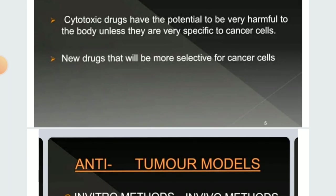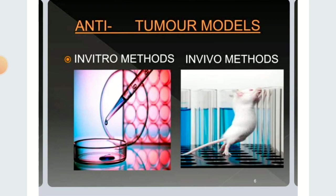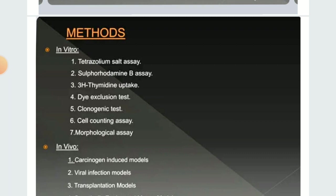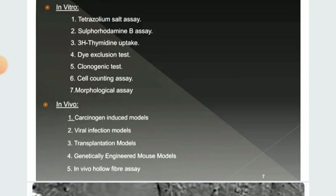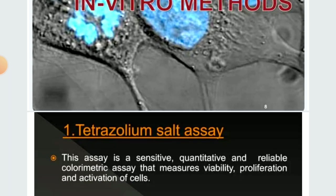There are two main categories of methods used to study screening of anti-cancer drugs. The first is in vitro and the second is in vivo. In vitro methods are seven: tetrazolium salt assay, sulforhodamine B assay, tritiated thymidine uptake, dye inclusion test, clonogenic test, cell counting assay, and morphological assay. In vivo methods are five: carcinogen-induced models, viral infection models, transplantation models, genetically engineered mouse models, and in vivo hollow fiber assay.